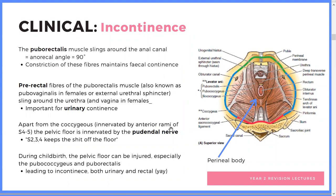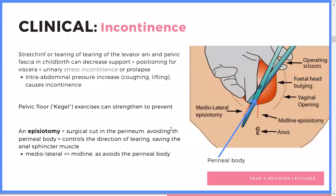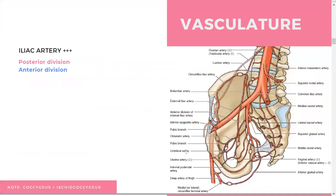To avoid incontinence in a surgical setting, you try to prevent it. If you see there's going to be pressure on that area and the perineum might tear, you make a controlled incision so you know what structures you're cutting — and that operation is called an episiotomy. The vasculature of this area comes from the iliac artery, divided into posterior and anterior divisions.